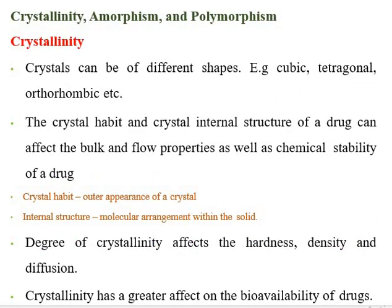Under bulk characterization, we first discuss crystallinity, amorphism, and polymorphism. Crystals can be of different shapes — cubic, tetragonal, orthorhombic, etc. Crystals are solids in which component atoms are arranged in a definite pattern, whose surface regularity reflects its internal symmetry. Crystal habit and internal structure affect bulk and flow properties as well as chemical stability. Degree of crystallinity affects hardness, density, and drug diffusion from its dosage form, and crystallinity has a greater effect on drug bioavailability.